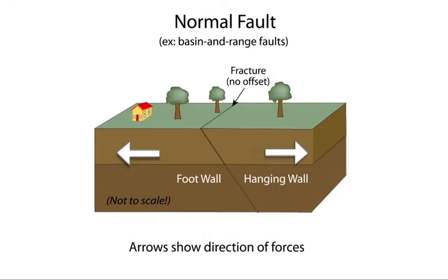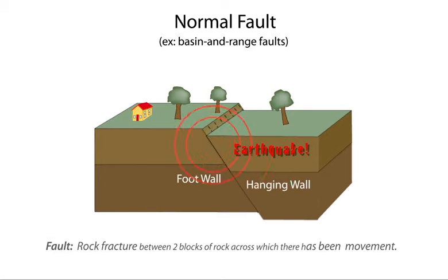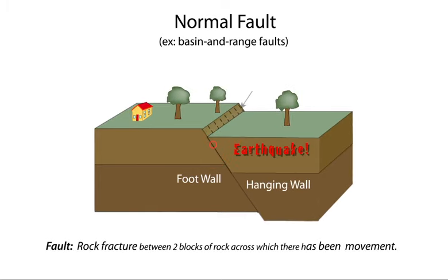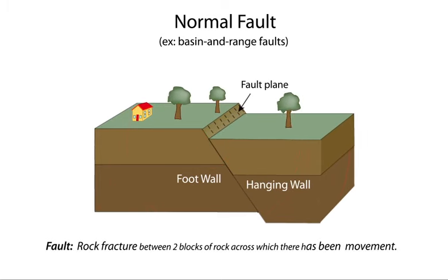In a normal fault, the block above the fault, called the hanging wall, moves down relative to the block below the fault, called the foot wall. This fault motion is caused by tensional forces and results in extension.